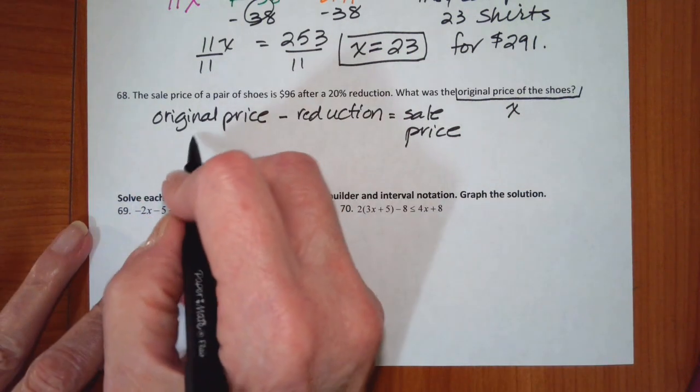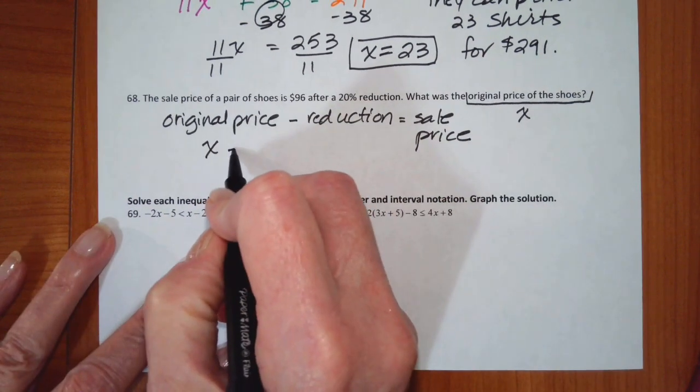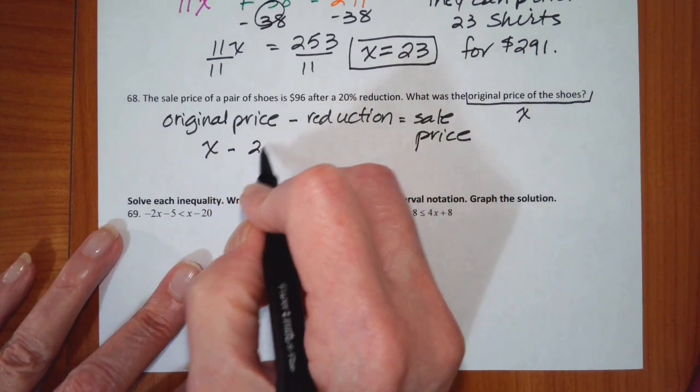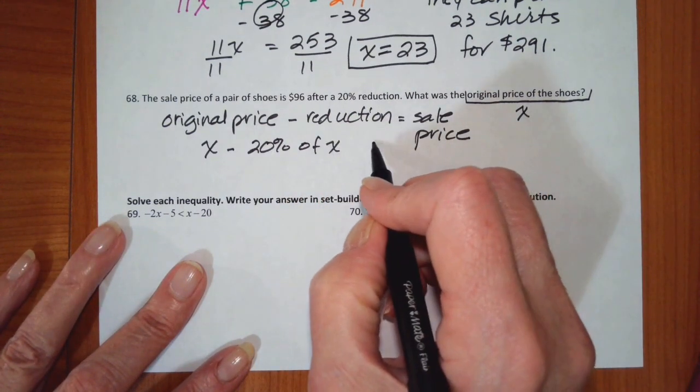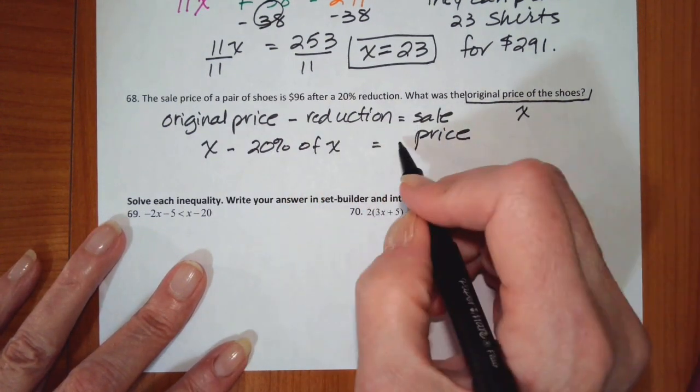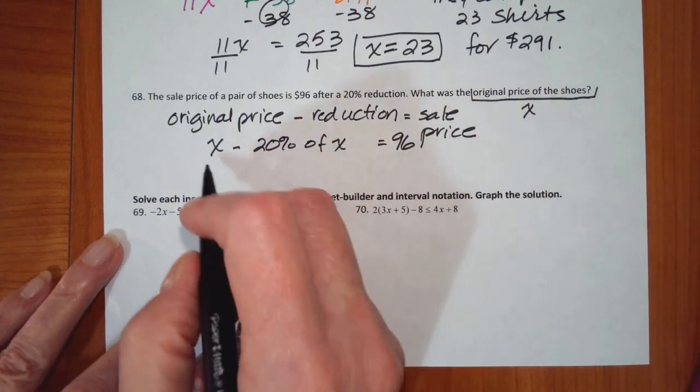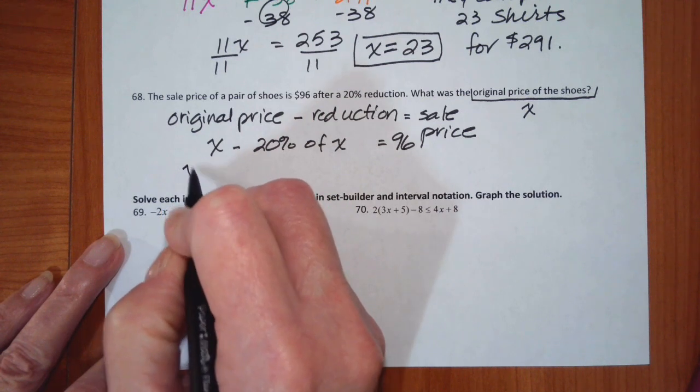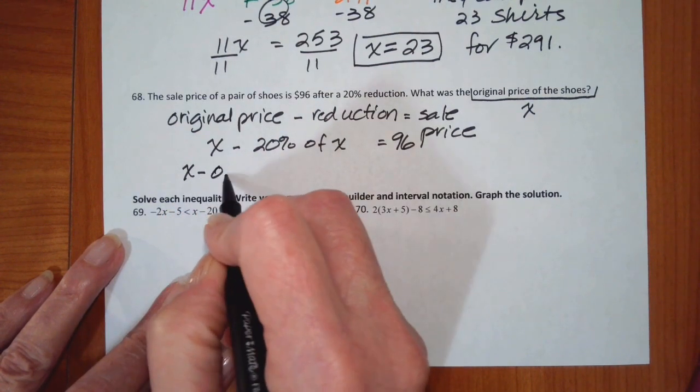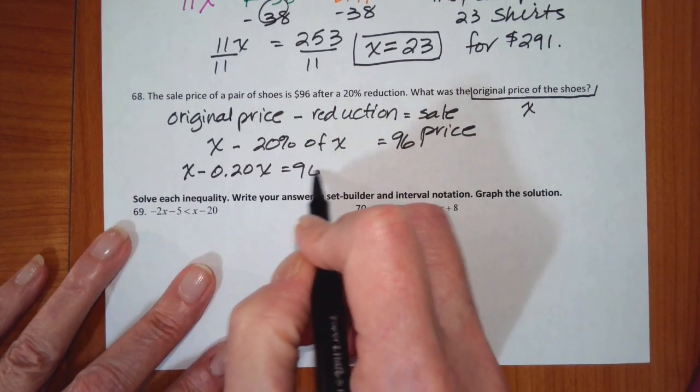Well, the original price this is what we don't know. The reduction is 20% of x and we know the sale price is 96. So this is x minus 0.20x equals 96.